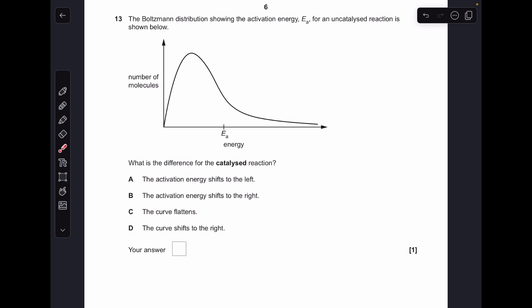Number thirteen. A catalyst provides an alternative route for a reaction with lower activation energy, so the activation energy is indeed going to shift to the left. Option A was the answer.